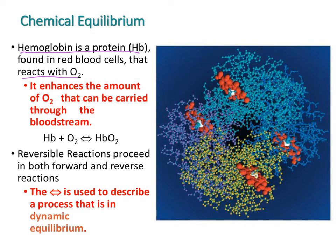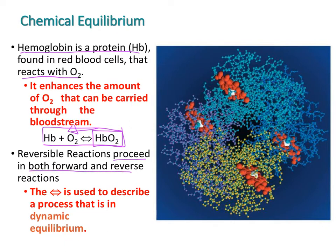It first binds in the blood near your lungs where the blood becomes oxygenated, grabs that O2, and takes it to other parts of your body that need oxygen. The key idea is that it can bind to O2 and then let it go — so it's a reversible reaction that can proceed in both the forward and reverse direction.